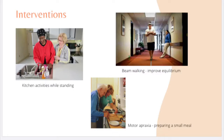A few more intervention pictures: the one on the left shows kitchen activities. These are ones you can do while standing — get them in a simulated kitchen, work on washing dishes, and make sure they're weight-bearing properly. If they're having problems with equilibrium, you can do beam walking, which is also really good for clients with TBI. And then the last one is motor apraxia — sequencing and things like that; you can have them prepare a small meal.